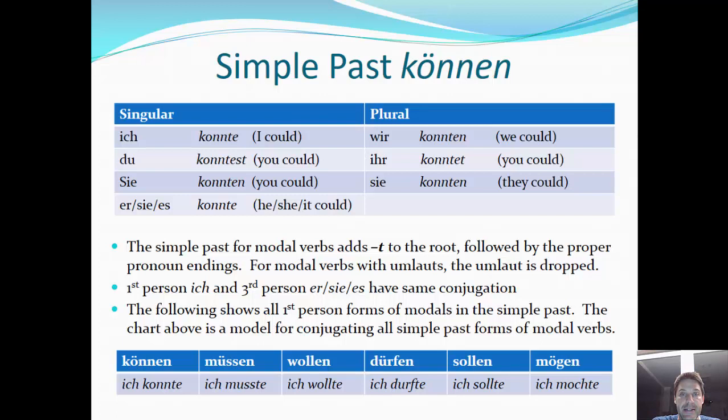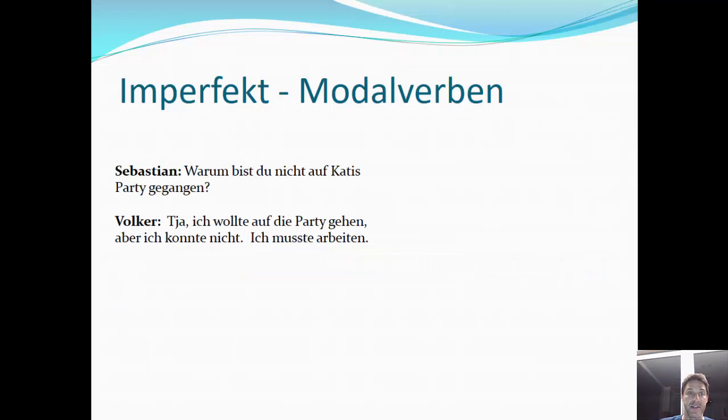Below we have a chart putting all these together. I've listed the first-person conjugation of all the modal verbs — können, müssen, wollen, dürfen, sollen, und mögen — but remember that third person 'er/sie/es' matches exactly, and the rest of the conjugations for formal 'Sie' and the plurals 'wir,' 'ihr,' and 'sie' use the same endings as in the chart above: ich konnte, ich musste, ich wollte, ich durfte, ich sollte, und ich mochte.